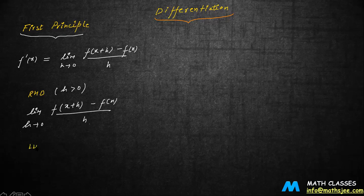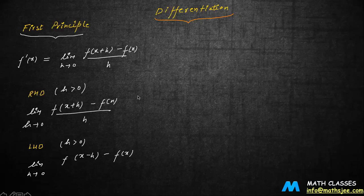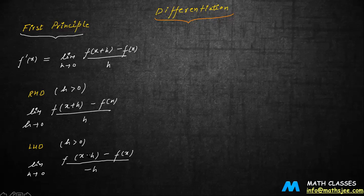Now let's write down the left-hand limit. Again h is taken as positive. The left-hand limit is limit h tends to 0 of [f(x minus h) minus f(x)] divided by minus h. If we are trying to find out the derivative at x equals a, we substitute a, so that will be f'(a). Since h is greater than 0, this is how you define the left-hand and right-hand limits, to find out whether the function is differentiable or not.